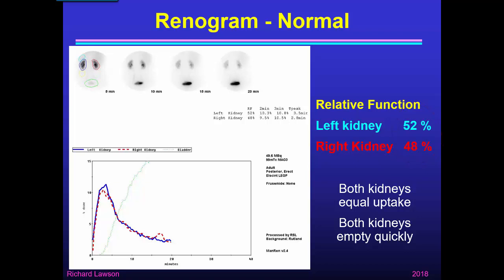Both renogram curves reach a peak at about 4 minutes, and thereafter the activity declines as it moves on into the bladder. In this case both kidneys empty quickly, and on the 20-minute image the kidneys have hardly any activity left — it's all in the bladder.